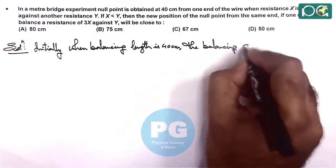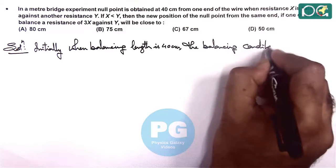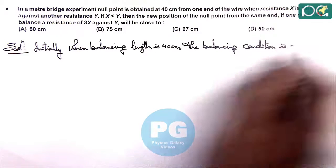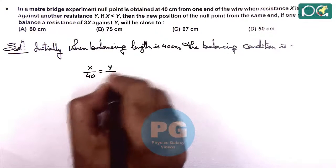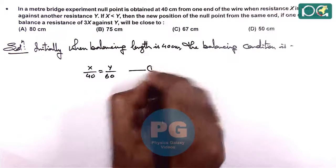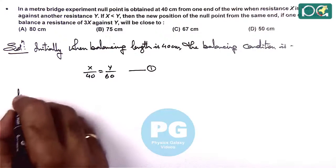The balancing condition is, here we can write x by 40 is equal to y by 60, that we can consider as equation one. And later,